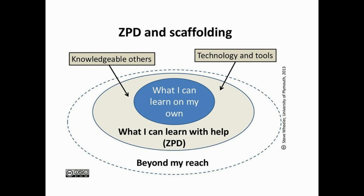Everything else is beyond their reach. The idea is that when knowledgeable others assist a child through language — and language here is key — they're able to get into their ZPD, their zone of proximal development. Tools and technology like computers and books also do this. Ultimately, once a child is finished with that scaffolding assistance, which is done through language, then that blue circle of what they can do on their own actually increases. That is how a child experiences growth.